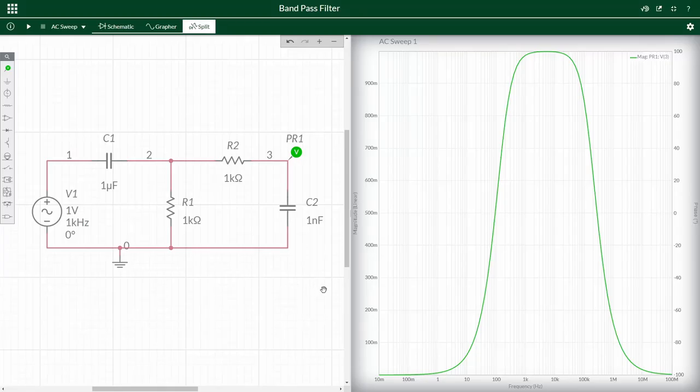Here, you can see that the low frequencies are attenuated, then there is a band of frequencies that are passed in the center, and then the high frequencies are also attenuated.